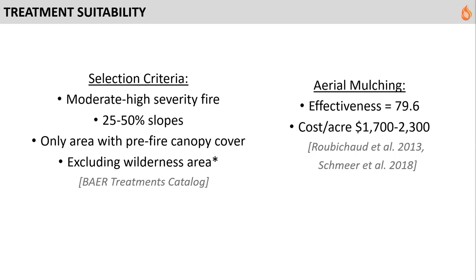Aerial mulching was the preferred treatment for Cameron Peak. Based on literature, there is an effectiveness value of about 79%, meaning you'd see about a 79% reduction in hillslope erosion where mulching was applied. We used a mean cost of about $2,000 per acre.